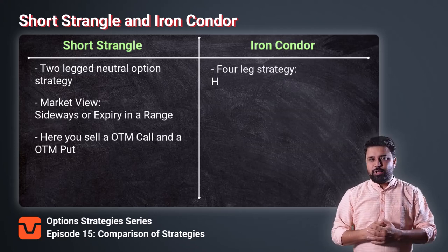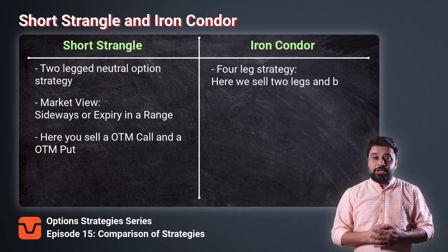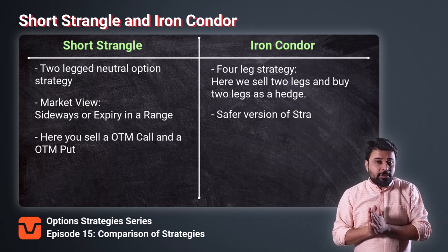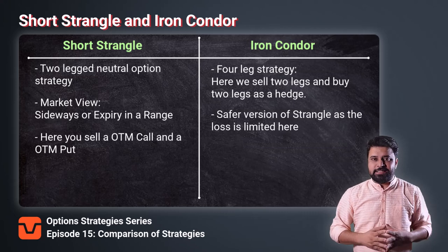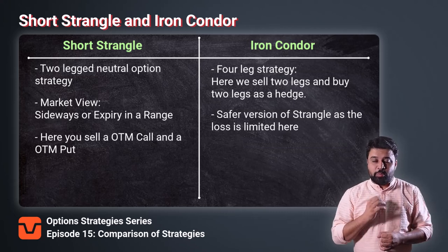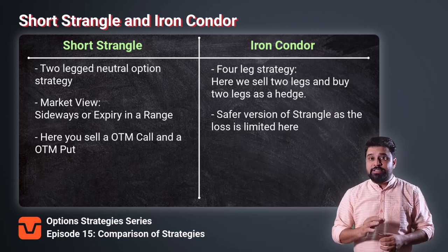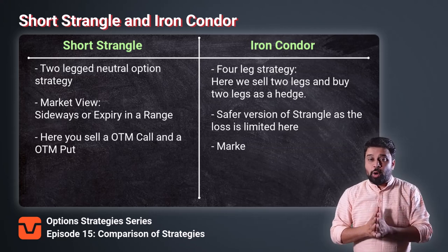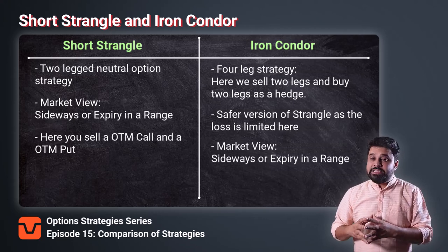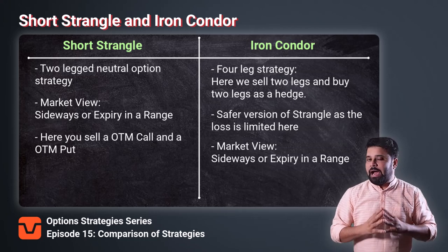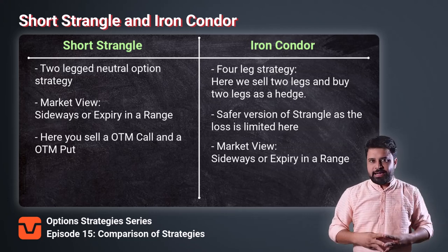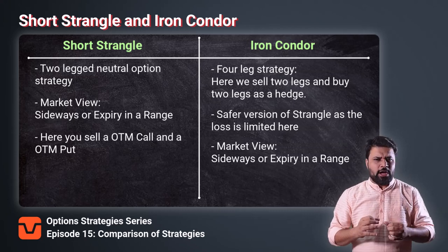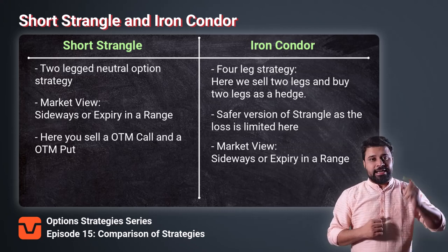Iron Condor is a four-leg neutral strategy where two legs are sold and two legs are bought. Iron Condors are the safer version of Short Strangle strategy. You sell two legs and to protect those legs, we buy two legs as our hedge or protection. Just like the Short Strangle strategy, when the market is moving sideways, you can take an Iron Condor strategy. We have made detailed videos explaining both these strategies. If you haven't seen it, then you can watch it right here.